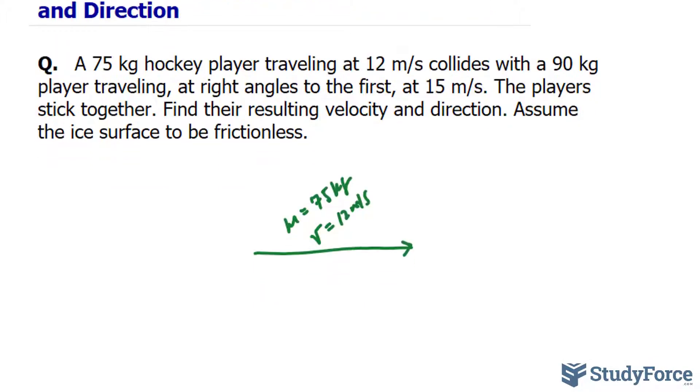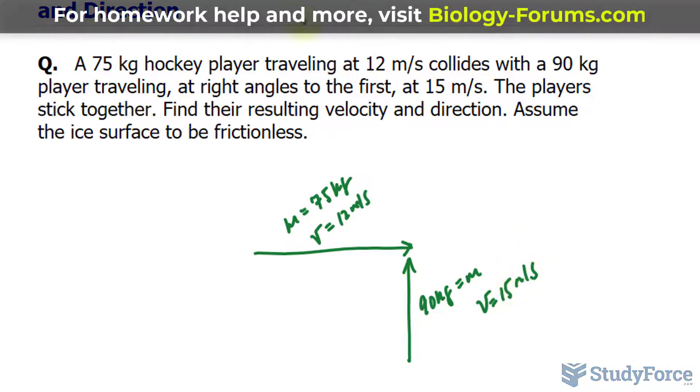Then we have a second hockey player who's a little heavier at 90 kilograms and they are traveling at right angles to the first. So they are traveling, let's say, up, 90 kilograms with a velocity that is 15 meters per second.